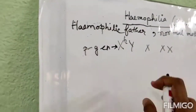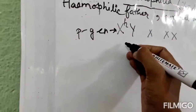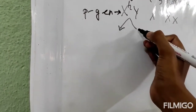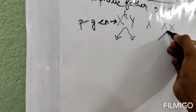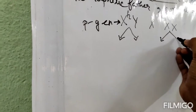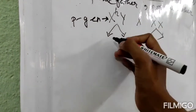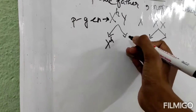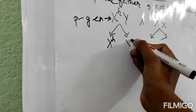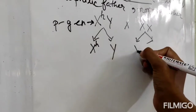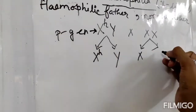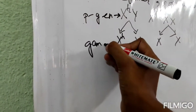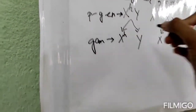Now these parents will produce the gametes. From the father we are getting X^H and Y. From the mother we are getting X and X. So these are the gametes.